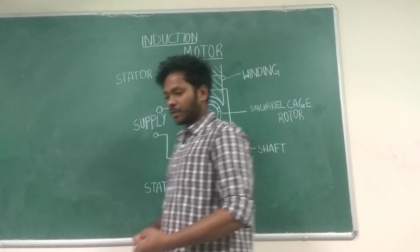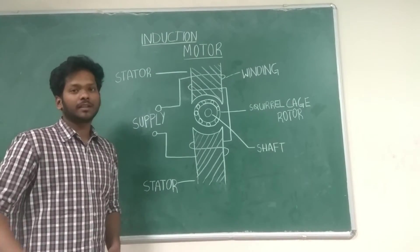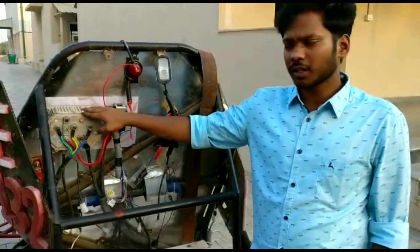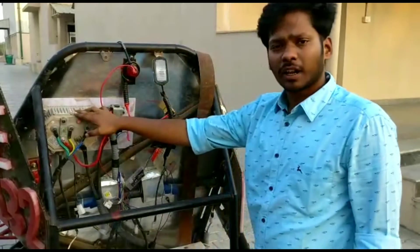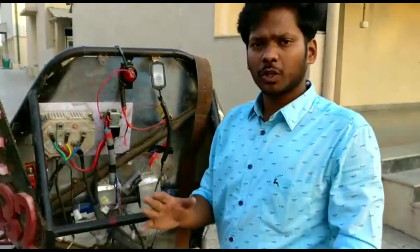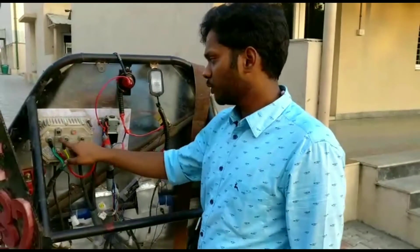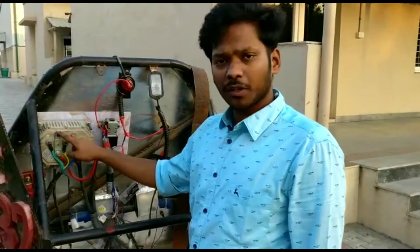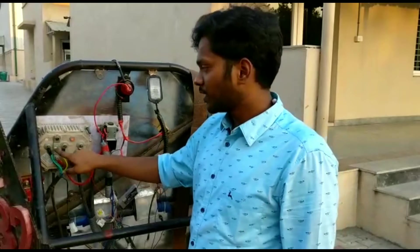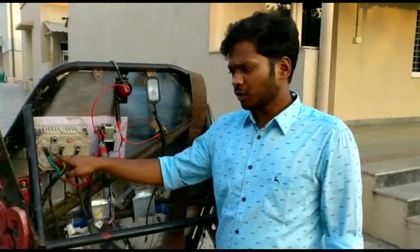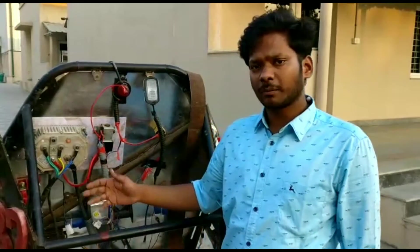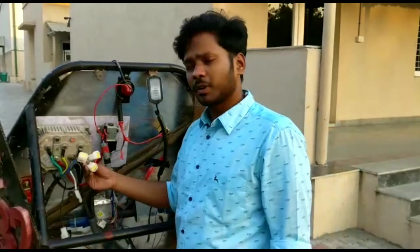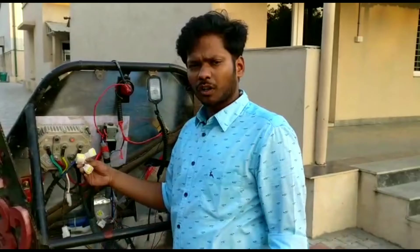Till now we have seen how a BLDC motor works and its operation, and induction motor and its operation. Next we will be seeing the motor controller and how it works. This motor controller is specified to our BLDC motor. The motor has three windings — let's assume them to be U, V, W. The three winding wires are directly connected to the motor controller, that's UVW. The motor controller also has two more terminals: one goes to your battery positive and the other goes to your battery negative. And this one is your fuse, which is rated for 150 amperes — it differs depending on how much current is drawn from your battery; it might be 100 ampere or even 200 ampere. The motor controller also has three terminals of outputs, which we will discuss in a separate session.